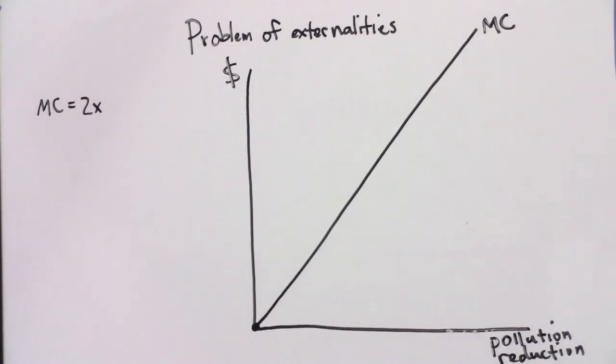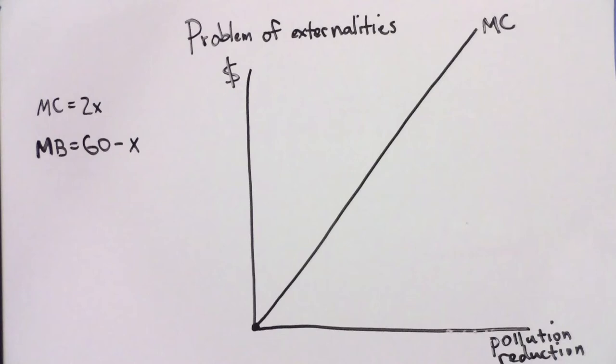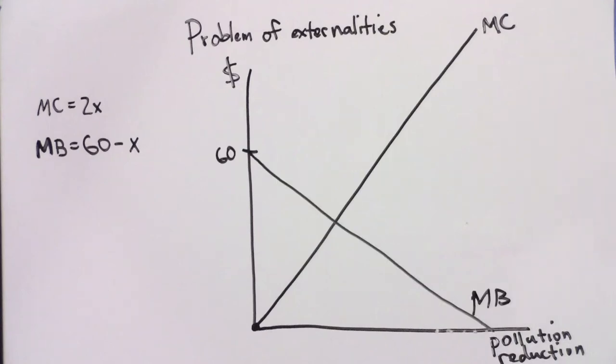The pollution next door bothers you. The benefit of pollution reduction is given by the following equation: MB equals 60 minus X, where X is the amount of pollution reduction in pounds per year, and MB is the marginal benefit to you in dollars. The marginal benefit of pollution reduction is decreasing. The first pound of pollution reduction is worth more to you — $59 to be exact — than the 60th pound of pollution reduction, which is worth $0 to you.